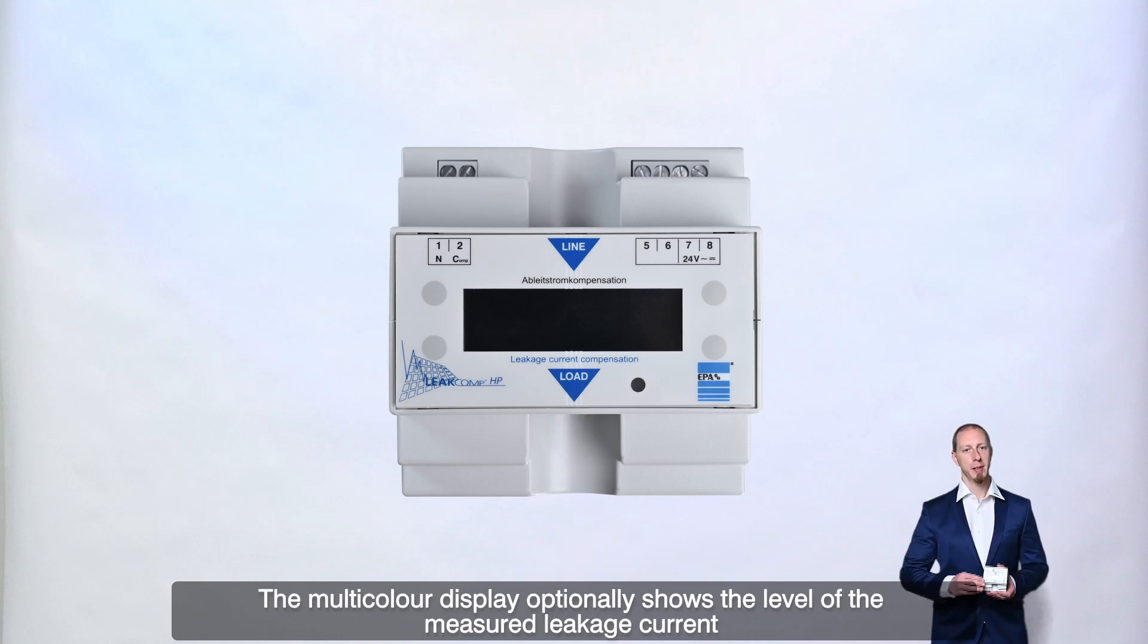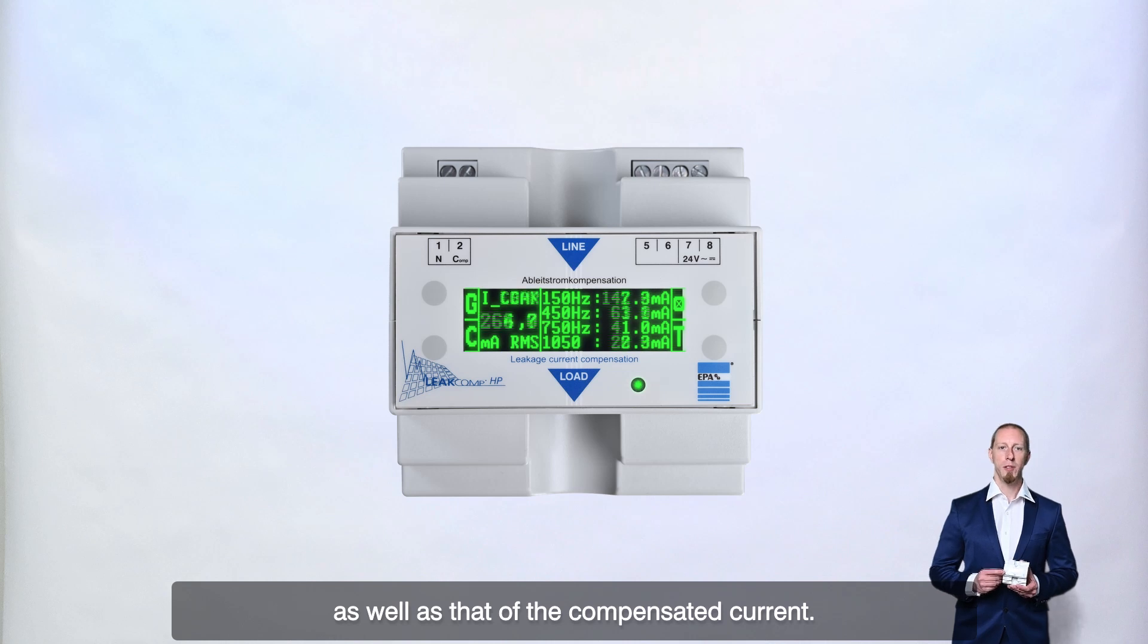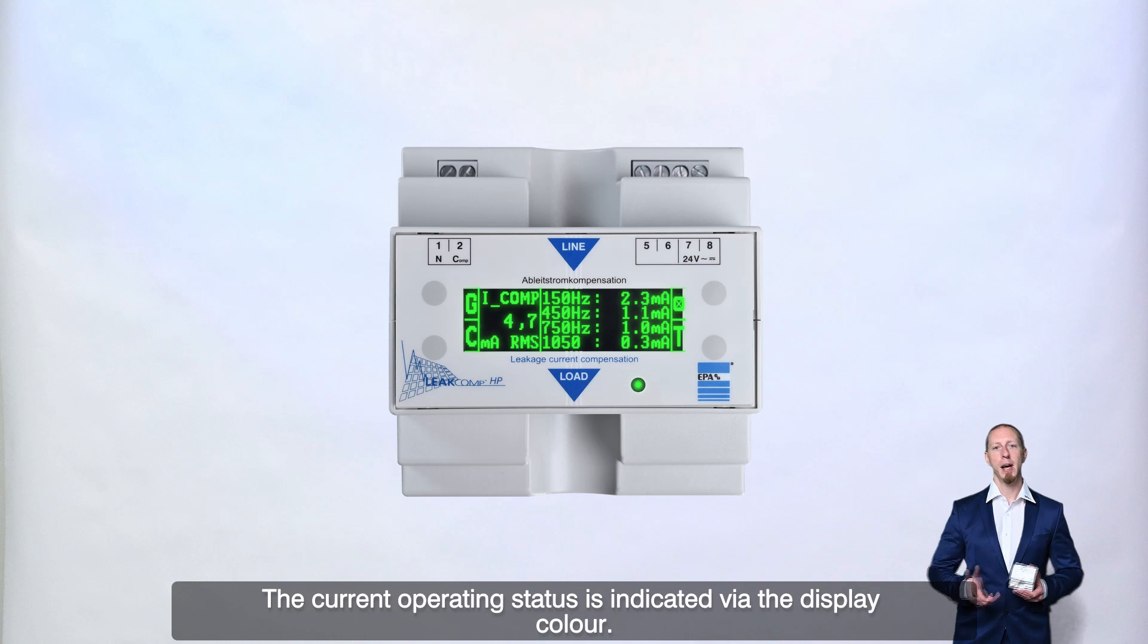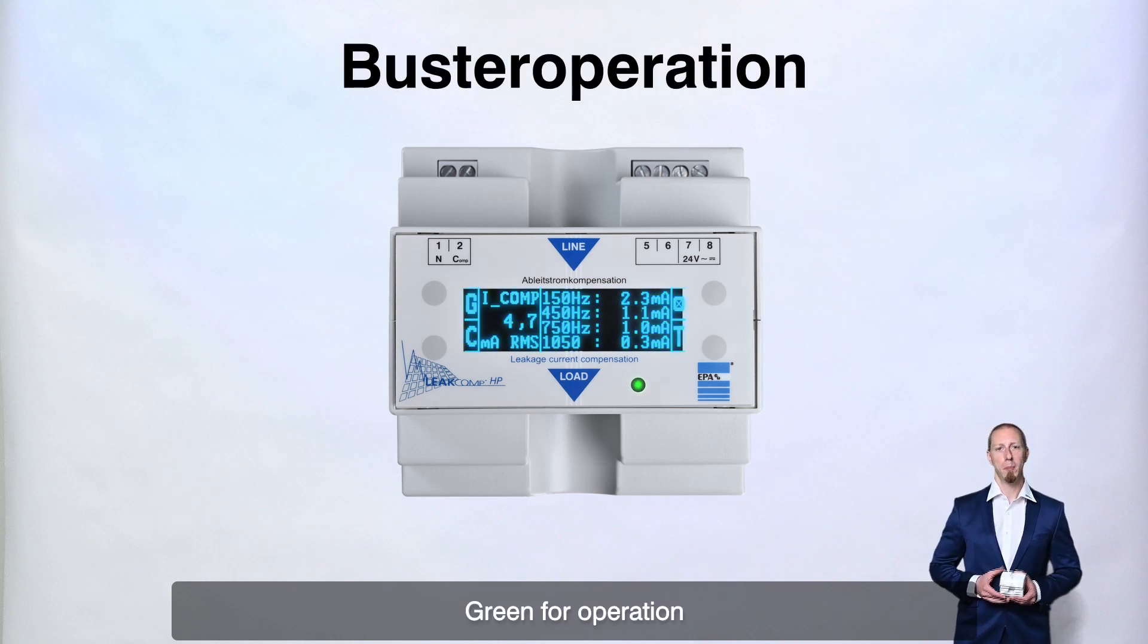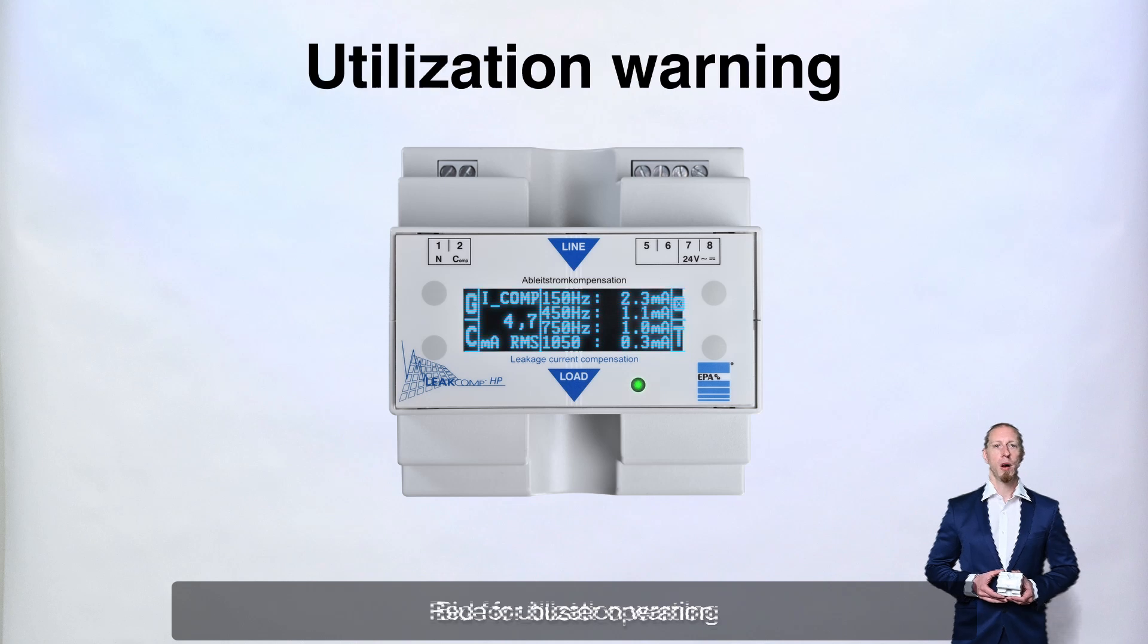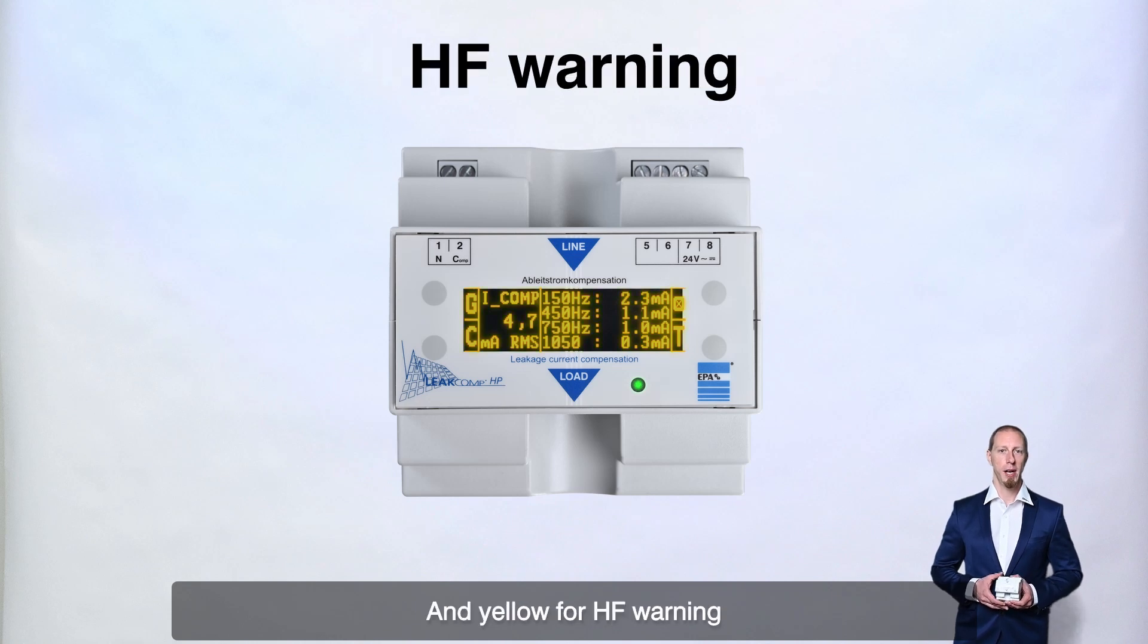The multicolor display optionally shows the level of the measured leakage current as well as that of the compensated current. The current operating status is indicated via the display color. Green for operation, blue for buster operation, red for utilization warning, purple for test operation and yellow for HF warning.